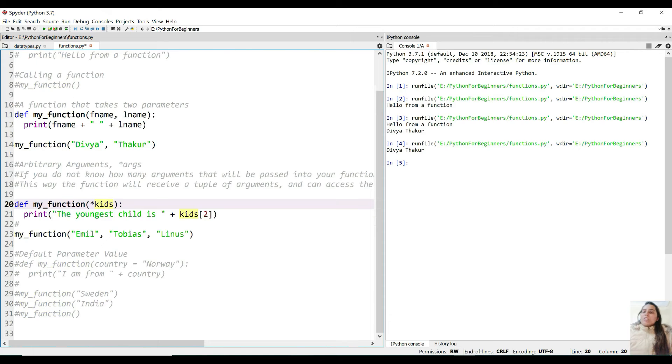What we'll do is over here you can pass in, then take the first argument. Let me run this and run it. The youngest child is getting printed.